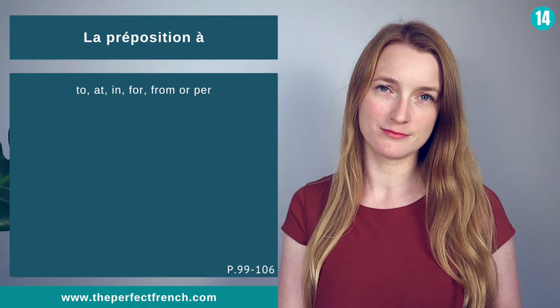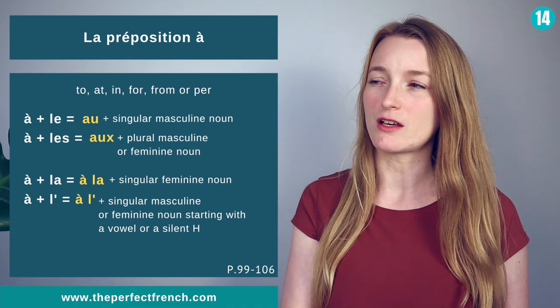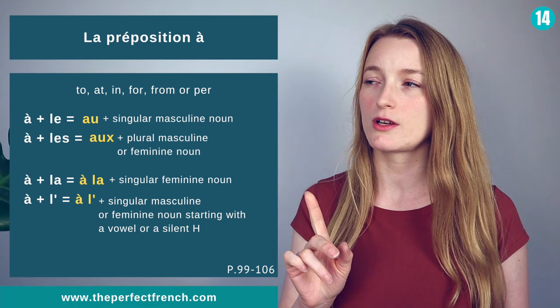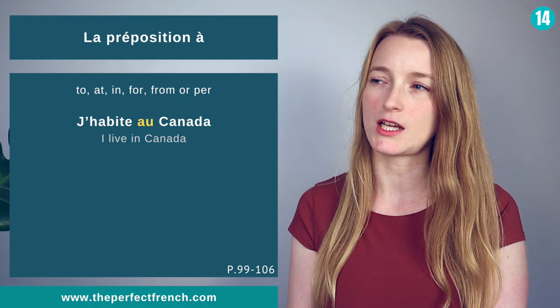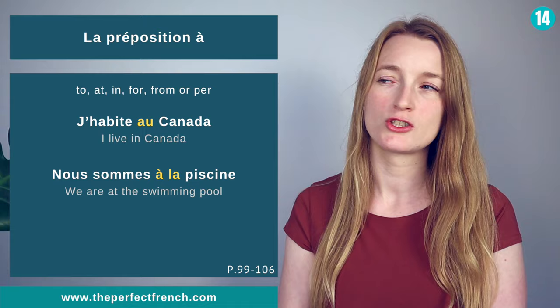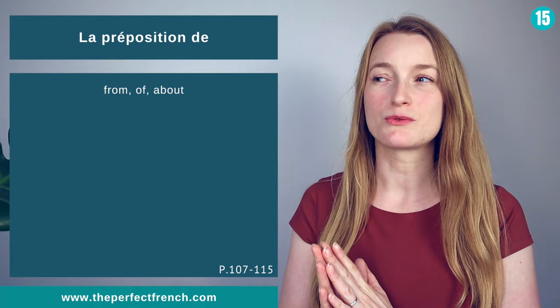La préposition à can have many different forms: au, aux, à la, or à l'. J'habite au Canada. Nous sommes à la piscine.